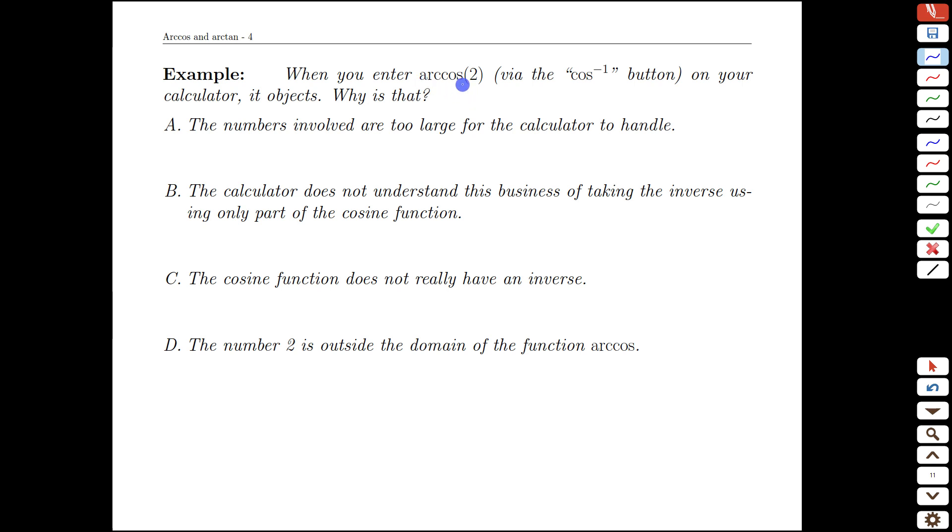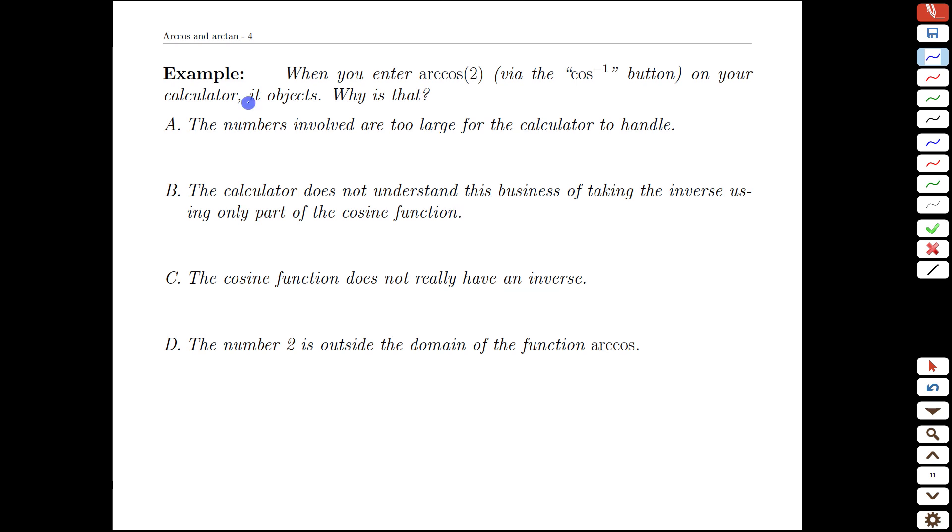Now, quick question. If we do this with arc cos of 2, let's take a quick stab at that. You get a math error when that happens, but it seems like a pretty reasonable calculation. Take a moment to think about why that might be the case. Why might we get an error when we compute arc cos of 2 with the calculator?